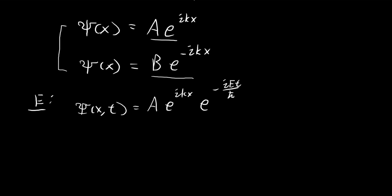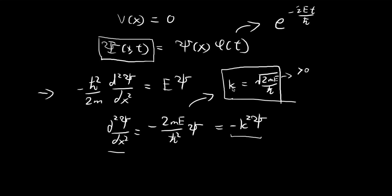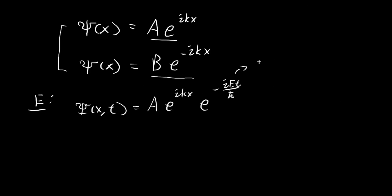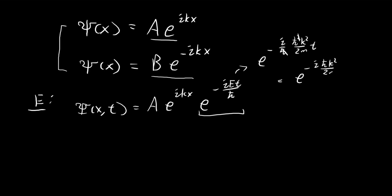I'm going to simplify this expression by removing E and defining everything in terms of k. Rearranging, E is actually equal to ħ²k² divided by 2m. So the φ(t) term becomes e to the power of negative i·ħ²k²/(2m)·t. The ħ's cancel, giving us negative i·ħk²/(2m)·t. Combining this with the positive ikx term, we get ik times the quantity x minus (ħk/2m)·t.